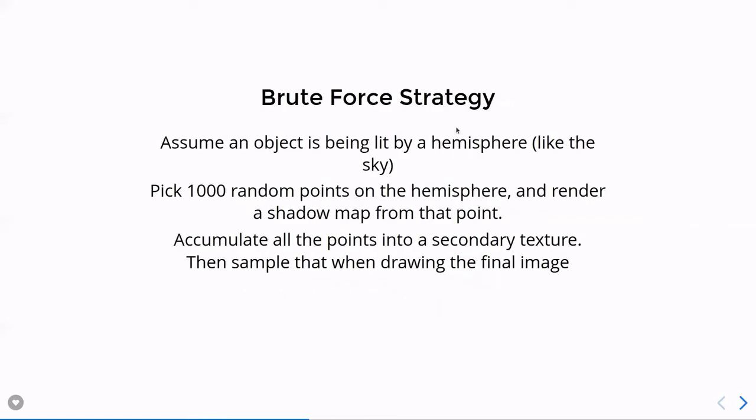So one way we can model this is to figure out if a polygon is visible from any random point. And we can do this using a very brute force method. So first, we're going to assume we have a hemisphere. We're going to assume our objects are being lit by hemispheres, not by spheres, but half of a sphere, the top half.